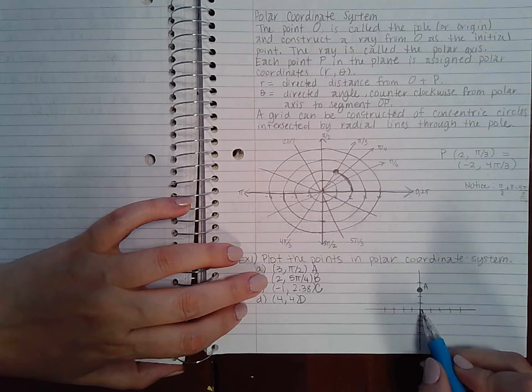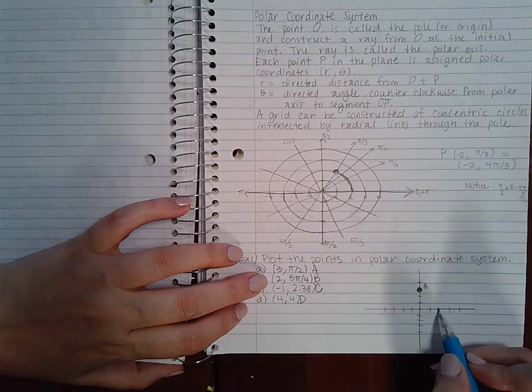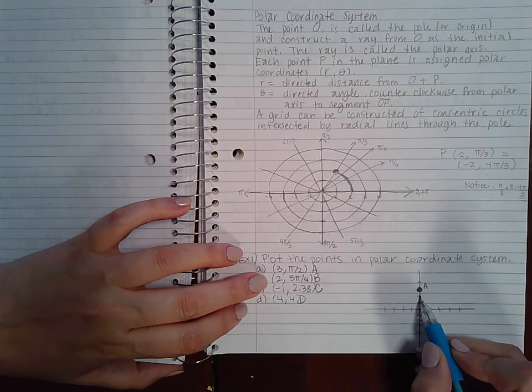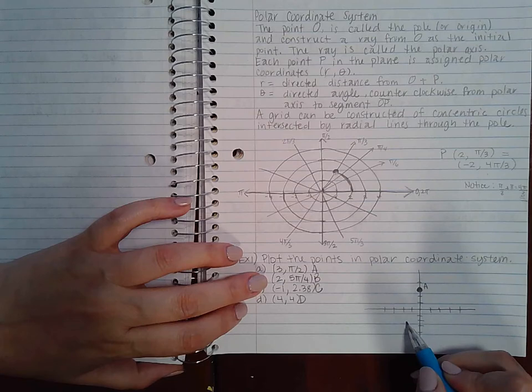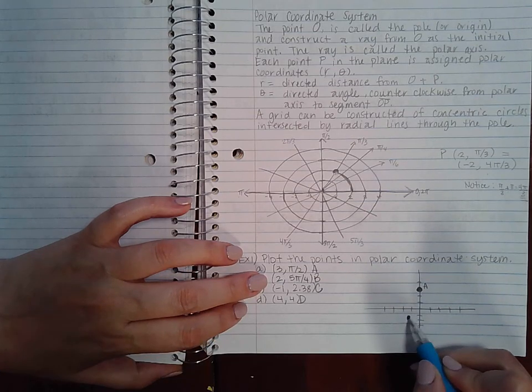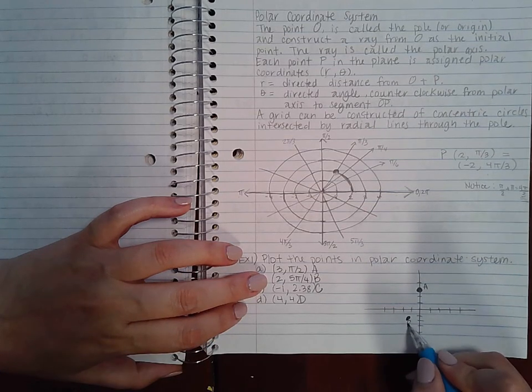Then for B, we're going to go out two, and then we're going to go 5π/4. So 1 π/4, 2 π/4, 3 π/4, 4 π/4, 5 π/4. So I end up with a point here.